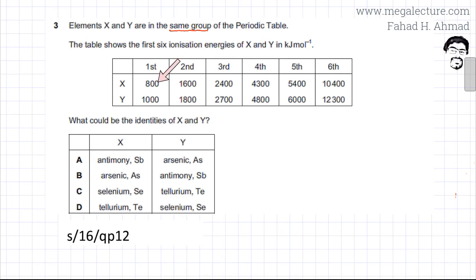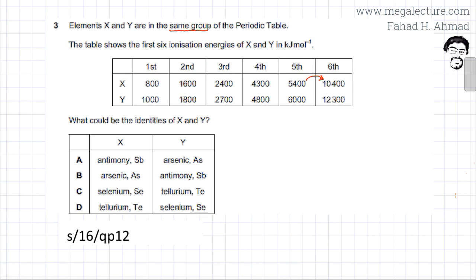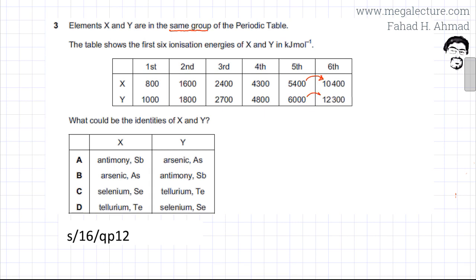You would notice that when removing electrons from element X, there is a gradual increase in ionization energies up to the fifth electron. Once you remove the sixth electron, there is a drastic increase in ionization energy. This is also true for element Y — removing the first electron is easy, then there is a gradual increase up to the fifth, but removing the sixth causes a drastic jump.